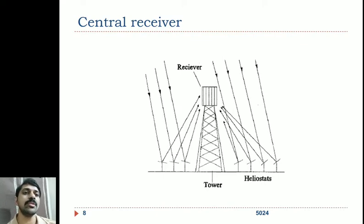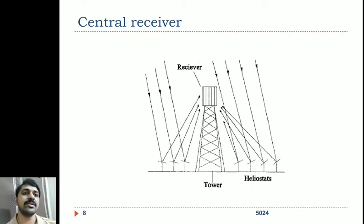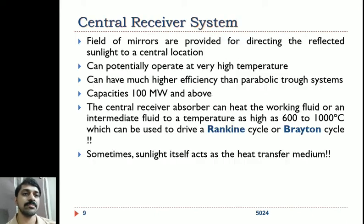In the central receiver or power tower system, there is a very tall tower at the center with the receiver on top, which carries the heat transfer fluid. A large number of mirror segments surrounding the central tower are termed heliostats. Solar energy falling on the heliostats is reflected to the central receiver, and their positioning ensures that the entire solar energy falling on them is concentrated onto the central receiver on top of the tower.